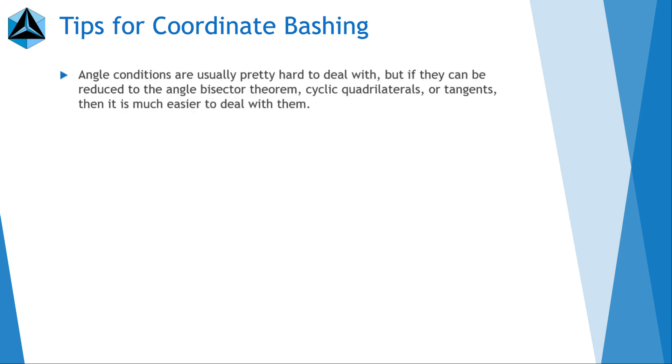So angle conditions, they are hard to deal with, but if they can be reduced to something like the angle bisector theorem, so we can relate stuff with side lengths instead of angles, or cyclic quadrilaterals, or things like that, then it's much easier to use than if you just left it as the way it was.